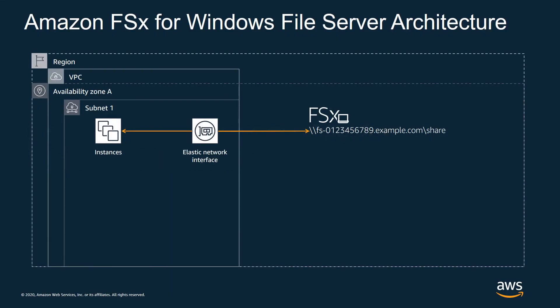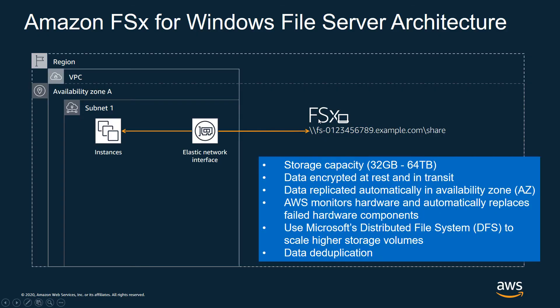During the demo, we created an Amazon FSx file system. In the background, it actually creates the server and the share, loads Windows on it, and creates the file system for you. Then it presents a network adapter in your VPC so your instances can talk to that FSx file system. We talked about being able to specify the storage capacity ranging from 32 gigabytes up to 64 terabytes. If you need additional space, you can combine multiple file systems together using DFS — Microsoft's Distributed File System — to get higher capacities.